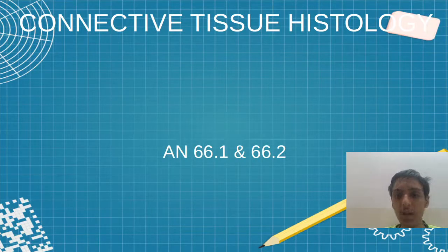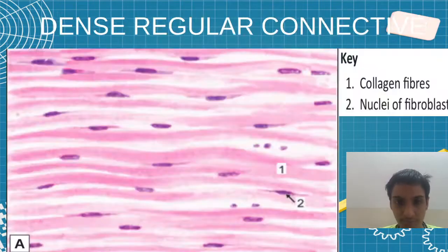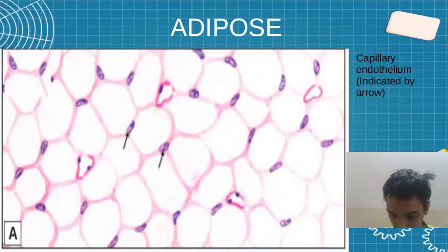Hello friends, in this video we will talk about histology of the connective tissue. First dense regular, irregular, and then adipose tissue.